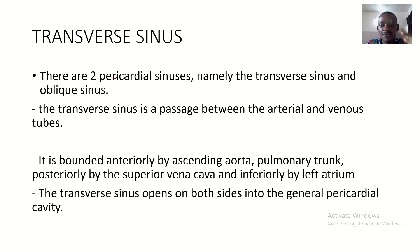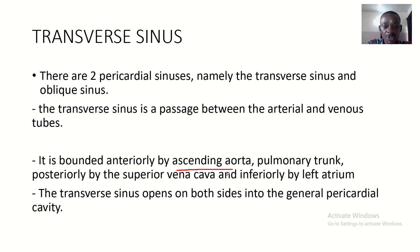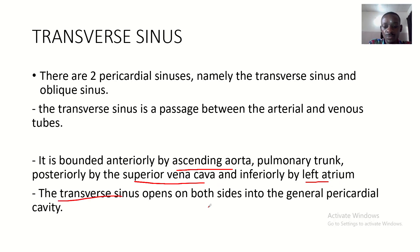The transverse sinus is bounded anteriorly by the ascending aorta and the pulmonary trunk, posteriorly by the superior vena cava, and inferiorly by the left atrium. The transverse sinus opens on both sides into the general pericardial cavity.